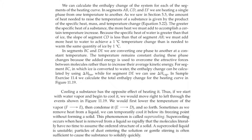Cooling a substance has the opposite effect of heating it. Thus, if we start with water vapor and begin to cool it, we might move right to left through the events shown in Figure 11.19 — first lowering the temperature of the vapor (F to E), then condensing it (E to D), and so forth. Sometimes as we remove heat from a liquid, we can temporarily cool it below its freezing point without forming a solid. This phenomenon is called supercooling. Supercooling occurs when heat is removed from a liquid so rapidly that the molecules literally have no time to assume the ordered structure of a solid. A supercooled liquid is unstable — particles of dust entering a solution or gentle stirring is often sufficient to cause the substance to solidify quickly.